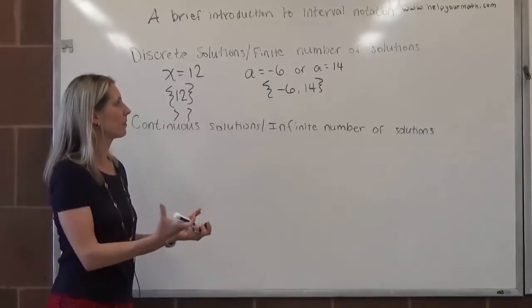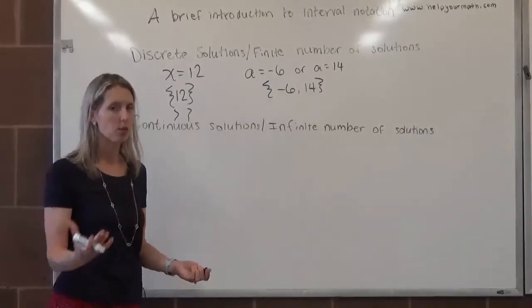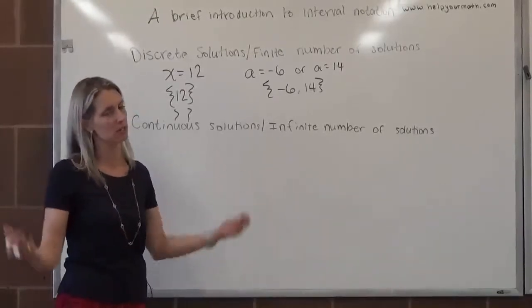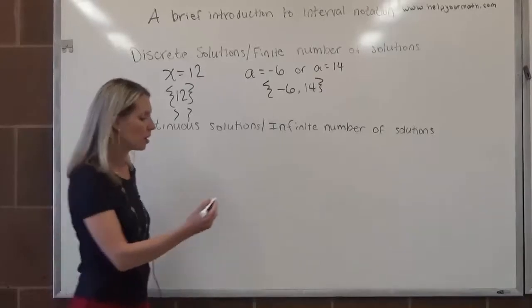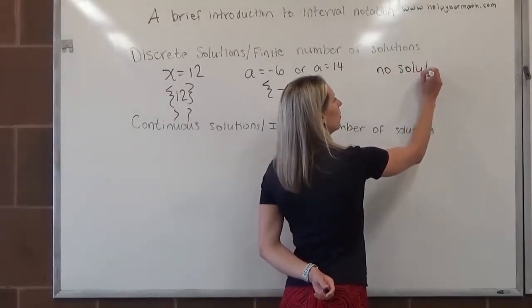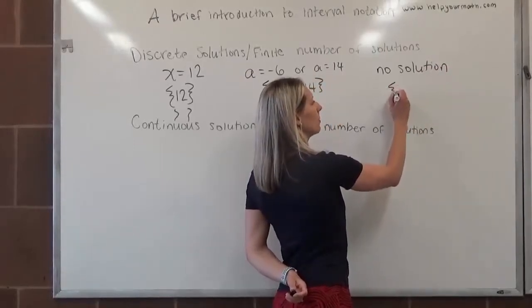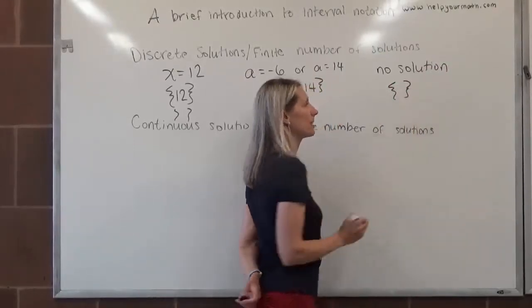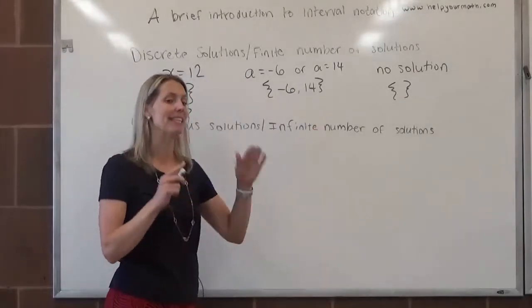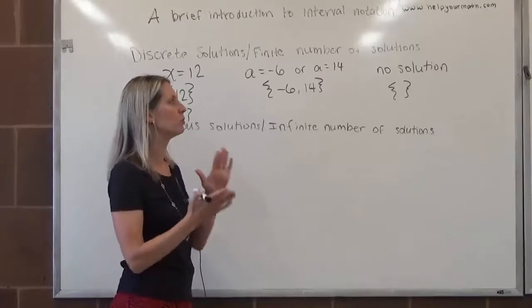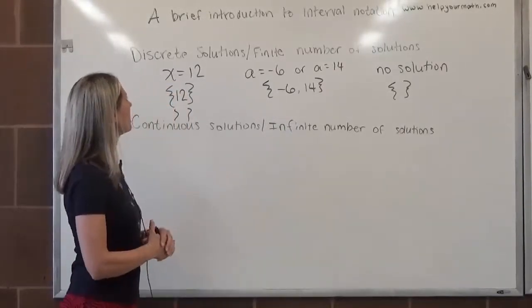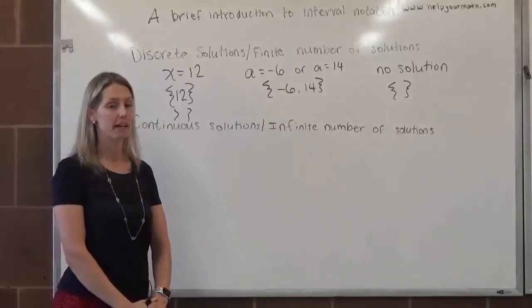We might also end up with something that has no solution. With linear equations, you might end up with something like 0 equals 5, where there's no variables and it doesn't make sense. To represent no solution, we use empty braces. We would open up braces, put nothing inside, and close them again. Putting anything inside the braces indicates there is a solution, so if there's no solution, we do not put anything inside the braces. That represents our discrete solutions or finite number of solutions.